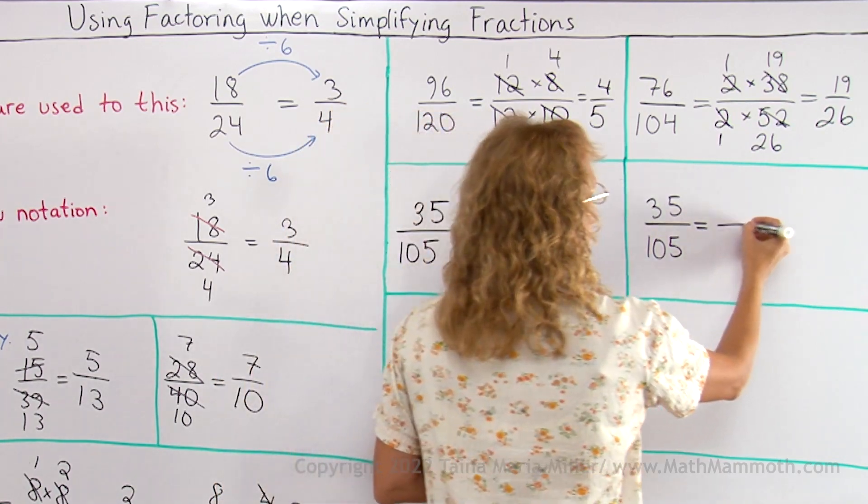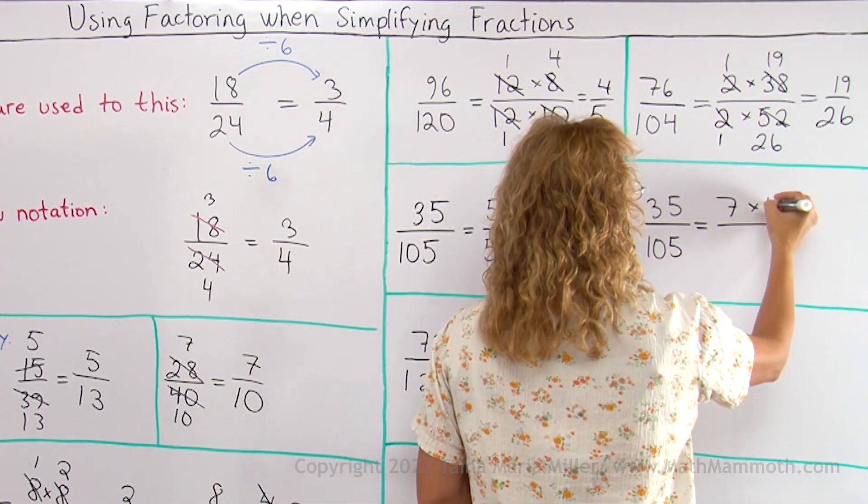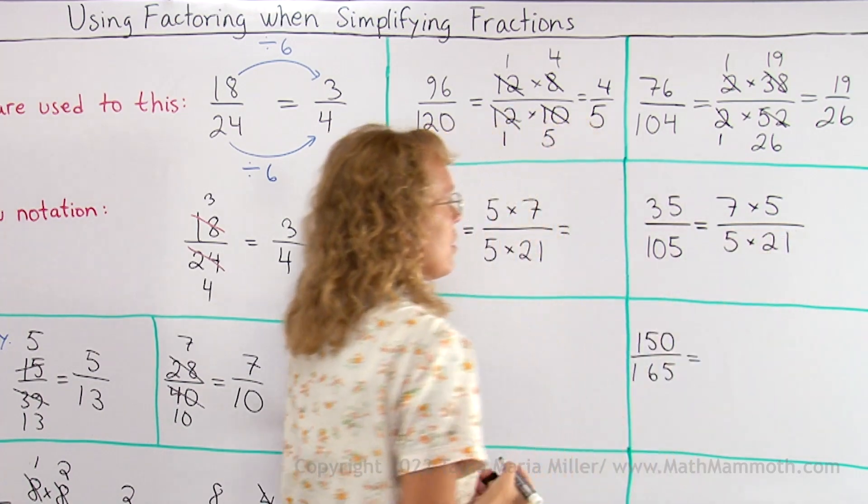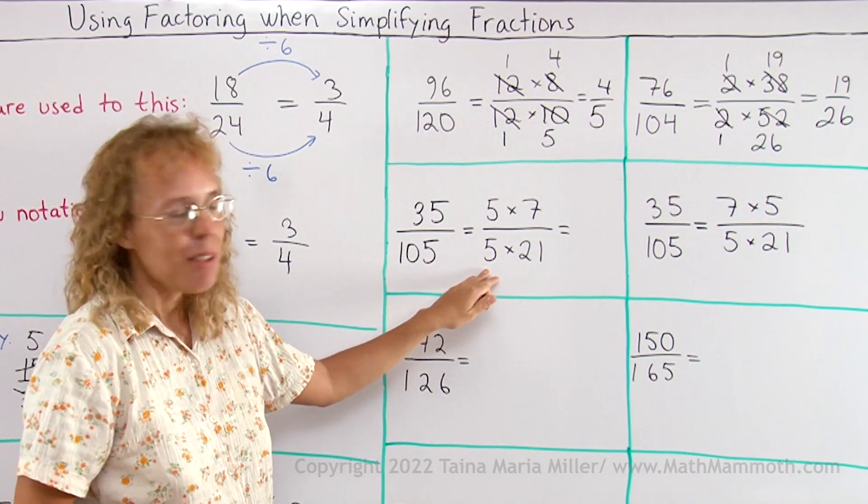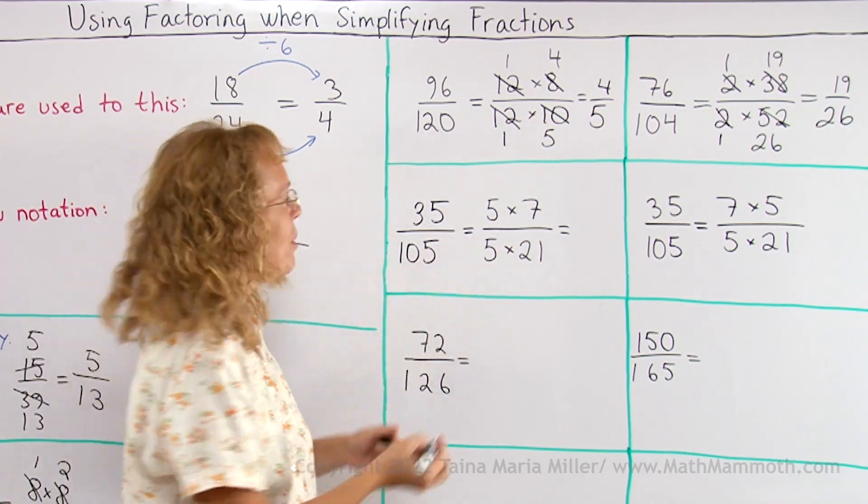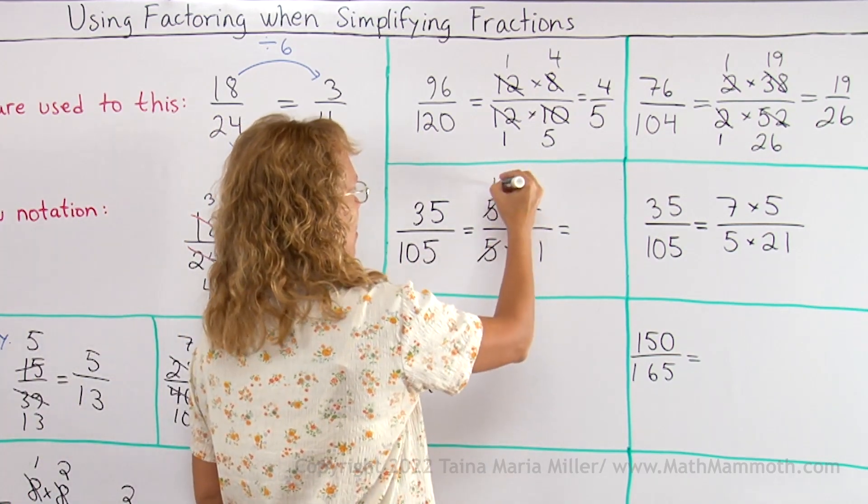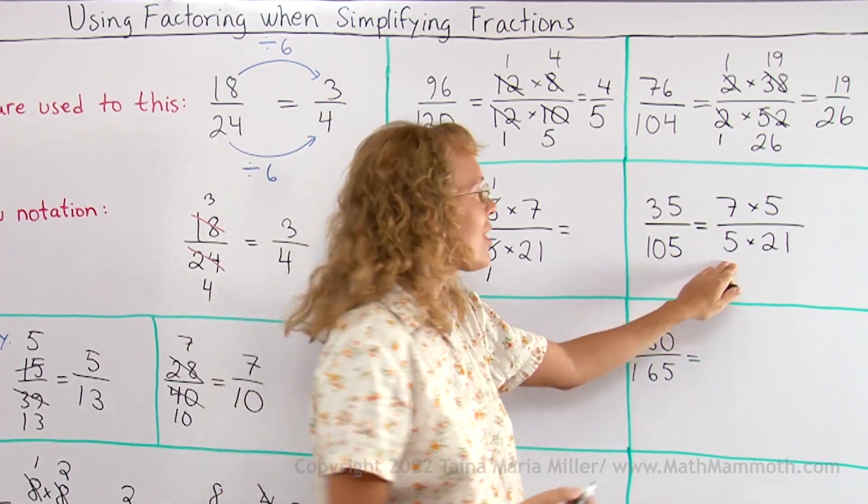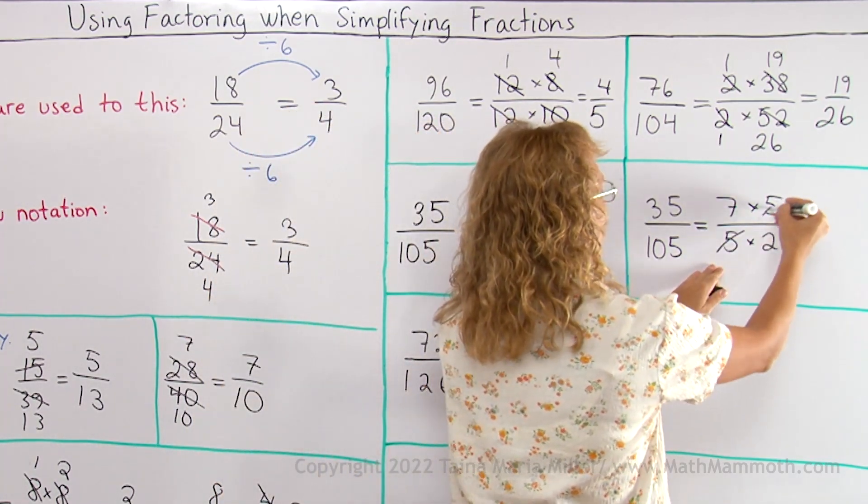Here I'm gonna do the same except switch the order of the multiplication on the top. Now as we have been studying, we can cancel out the 5s from here, like that, 1 and 1. But you know here we can also cancel out the 5s. It is simplifying crisscross like that.